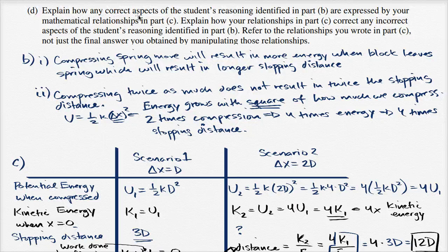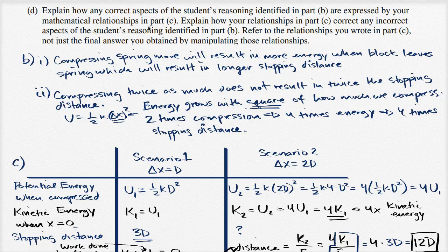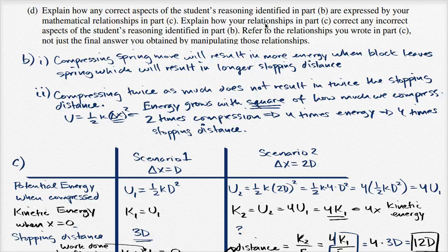All right, part D. Explain how any correct aspects of the student's reasoning identified in part B are expressed by your mathematical relationships in part C, and explain how your relationships in part C correct any incorrect aspects of the student's reasoning identified in part B.